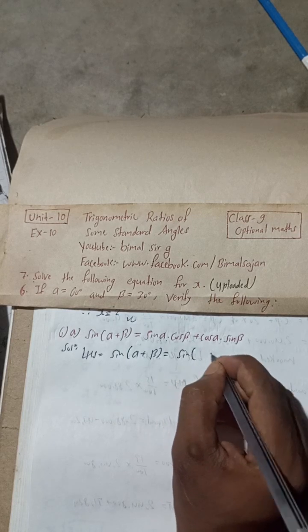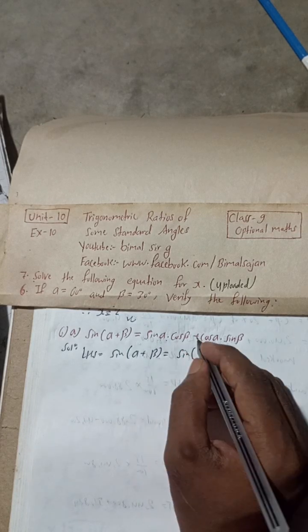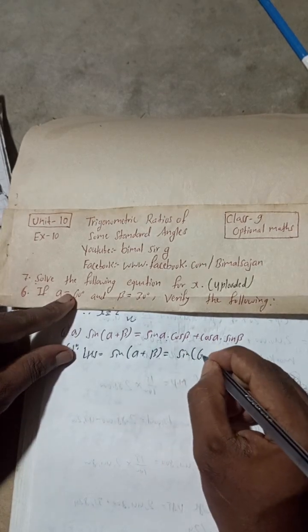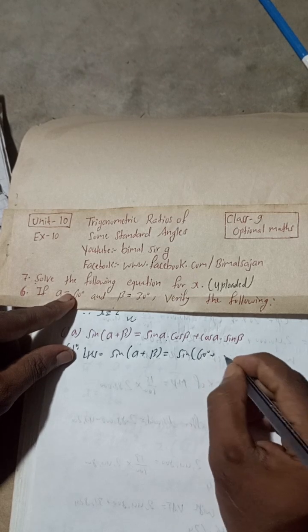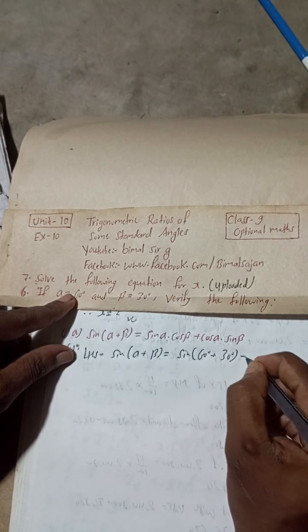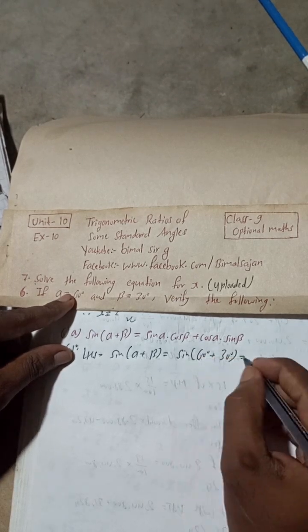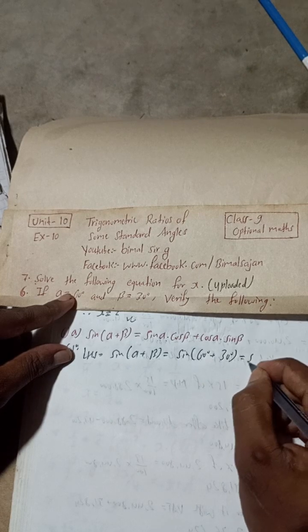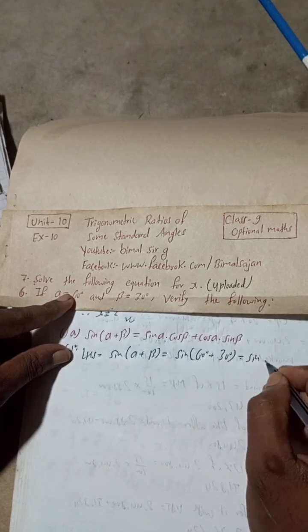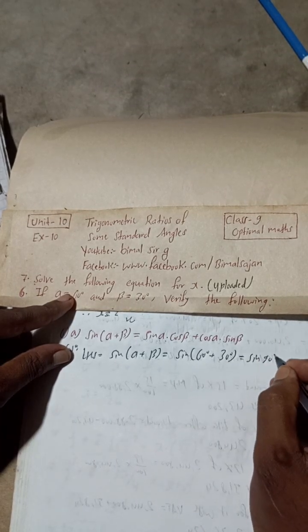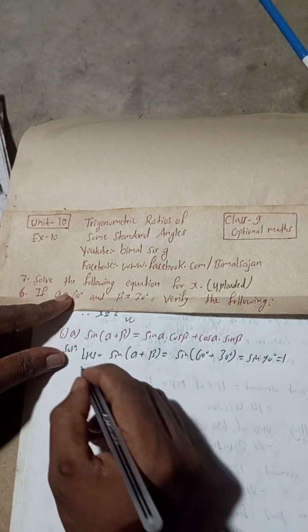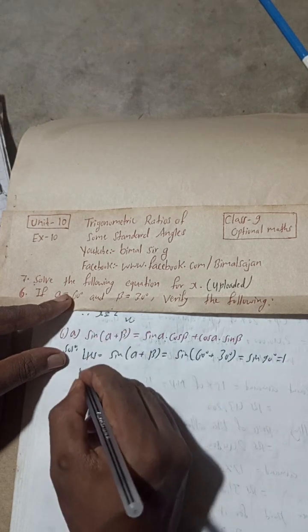Sin alpha means 60 degrees, so this is sin(60 + 30), which equals sin 90 degrees. So sin 90 degrees is equal to 1.